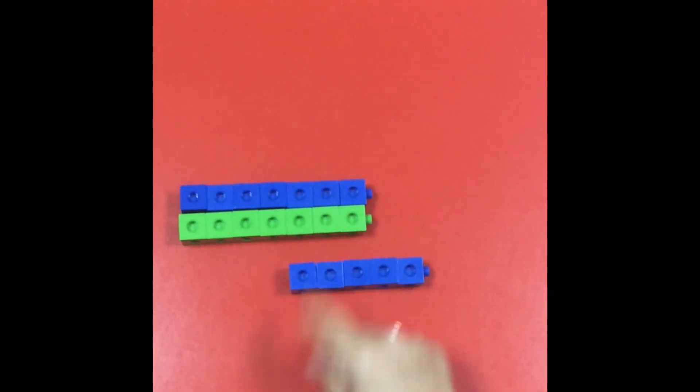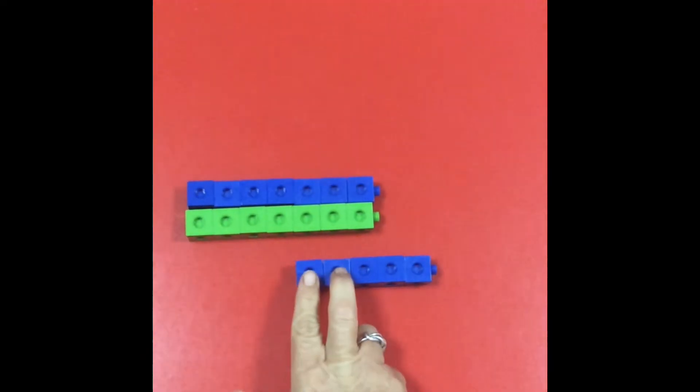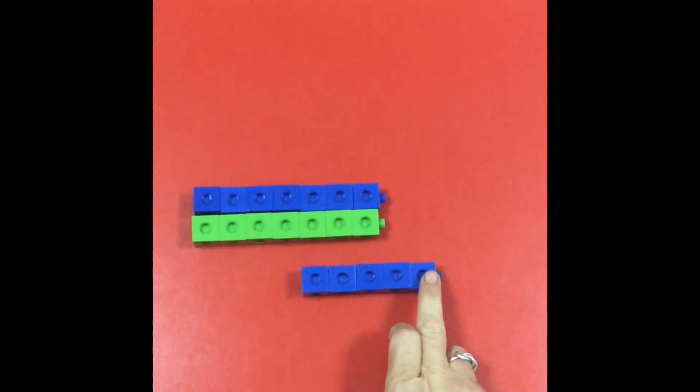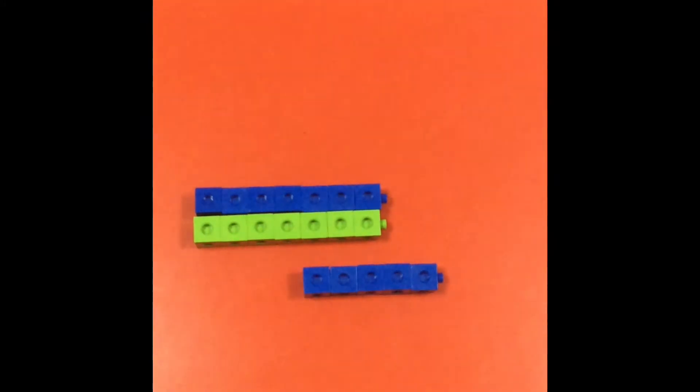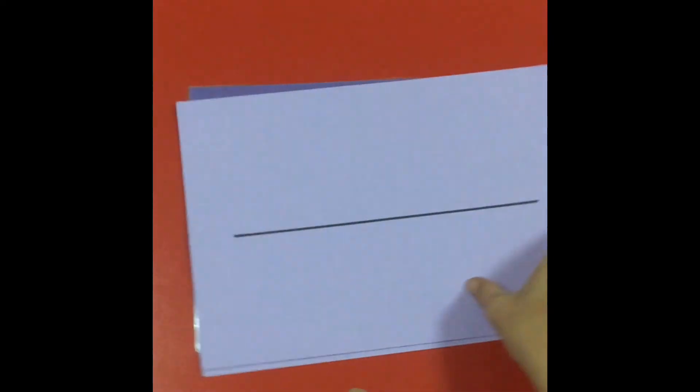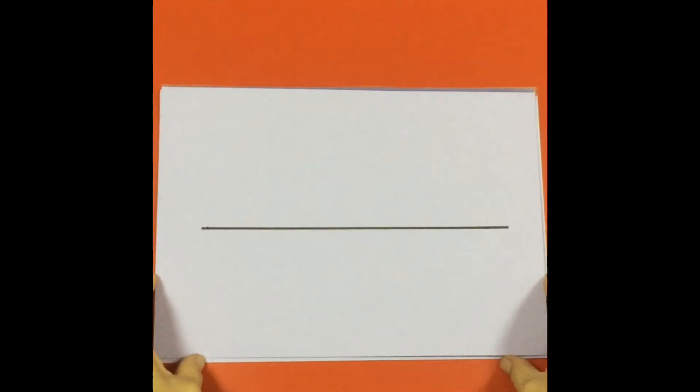So the difference between 12 and 7 is 5. Once they've mastered that, we then move on to using a number line again.